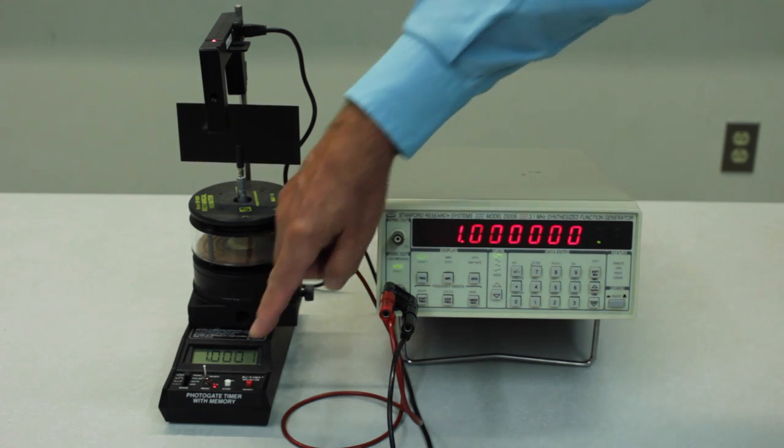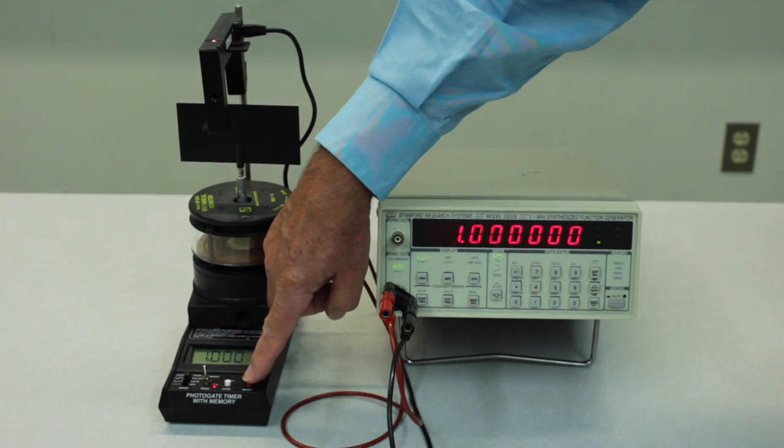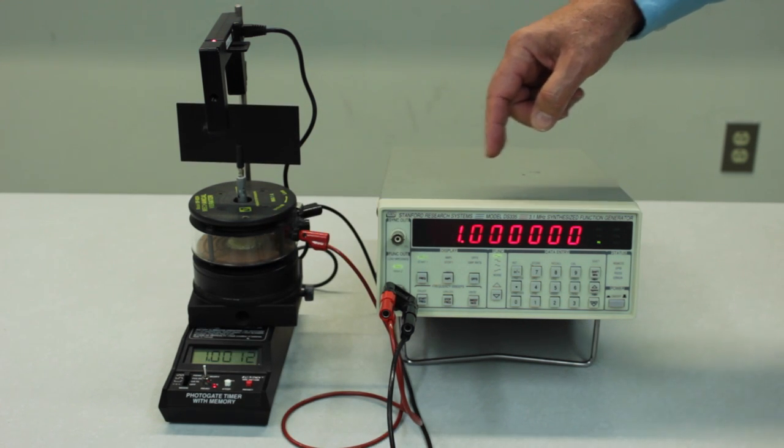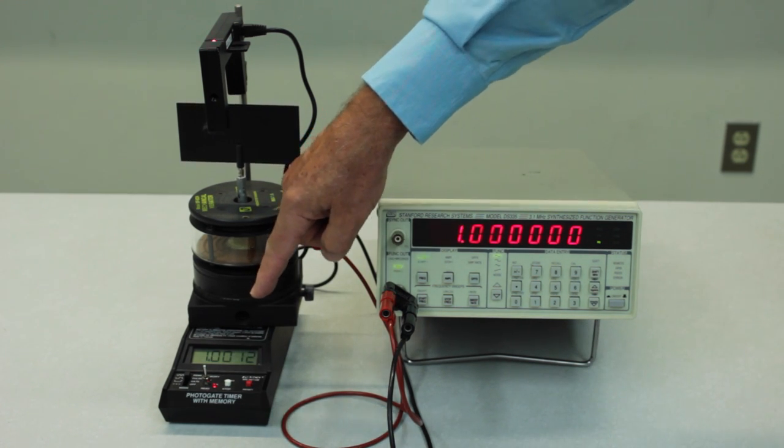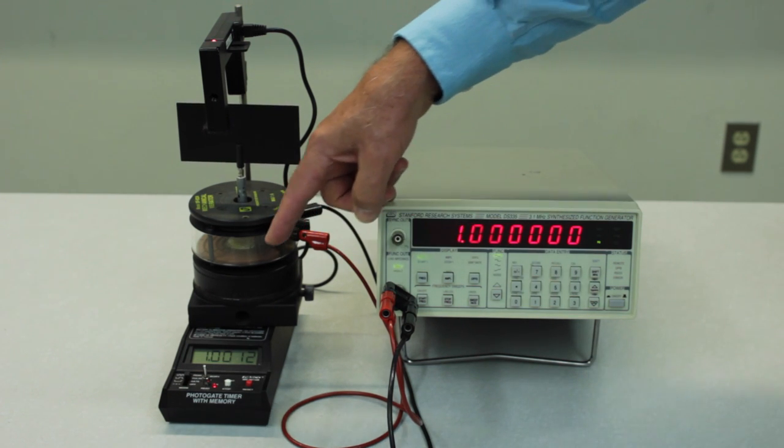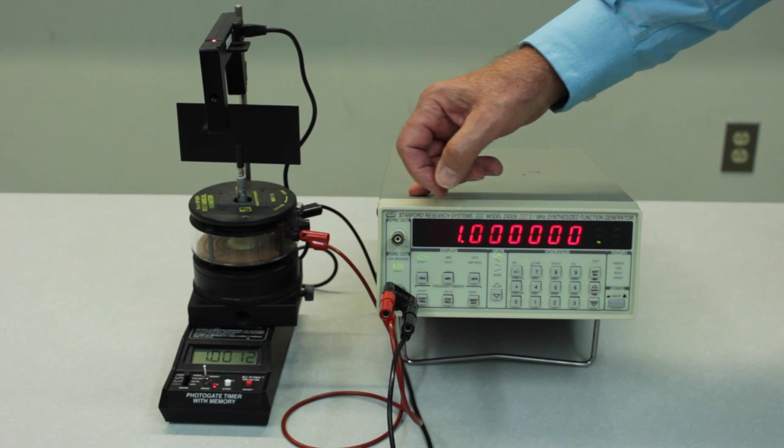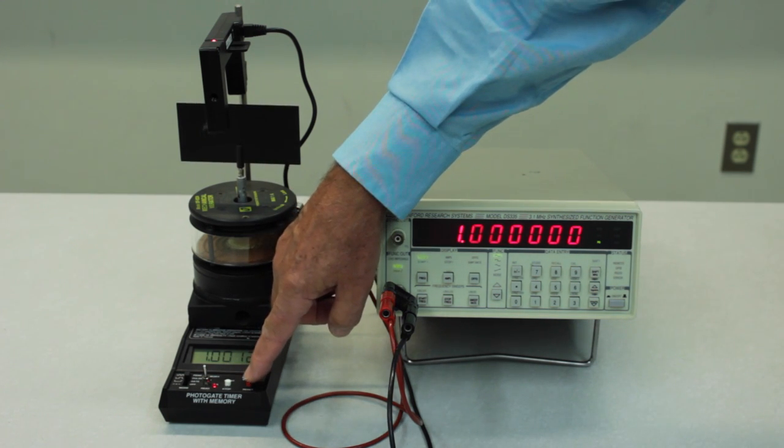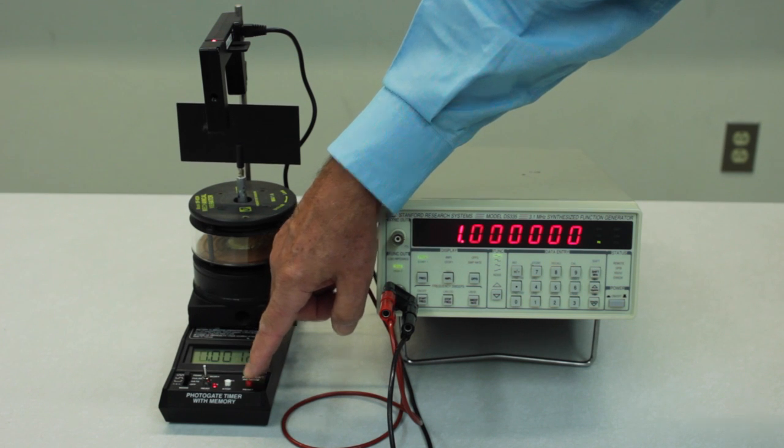And let's just make one measurement. So we'll press the reset button on the photo gate timer. And it looks like the frequency of 1 hertz is giving a period of 1.0012 seconds. We'll do this a few more times just to get a sense of the reproducibility.